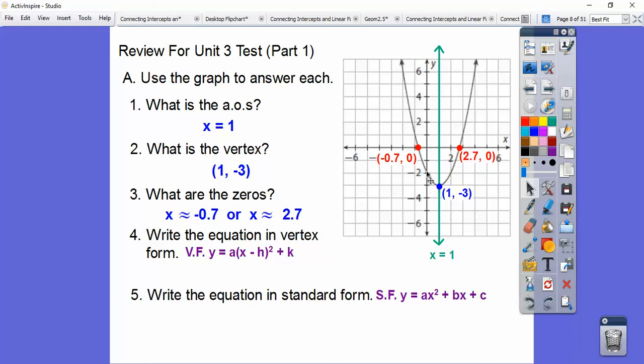When we go over 2, it goes up 4 right there. If we go over 3, 1, 2, 3, it goes up 9 right there. So it's just 1, so y equals x minus 1 squared minus 3.